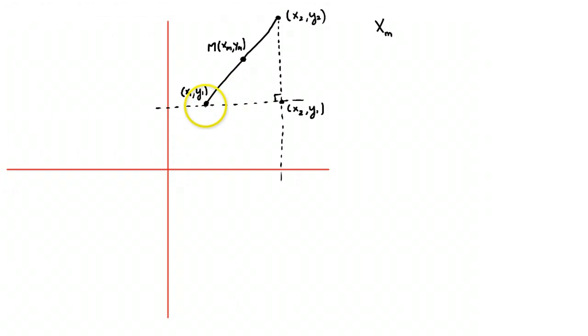So then the question comes, well, we said if we travel half the distance, half the horizontal distance, we're going to hit the midpoint, and if we travel half the vertical distance, we're going to get to the midpoint.